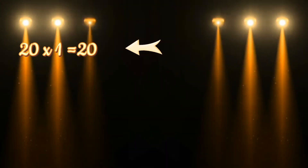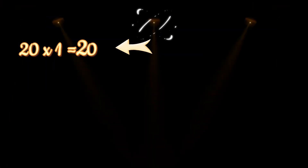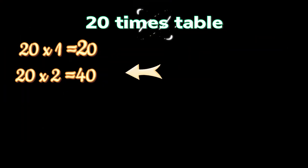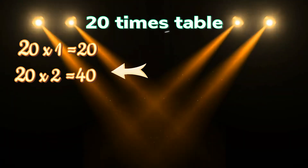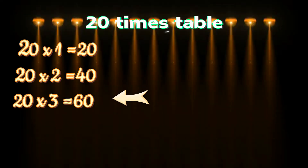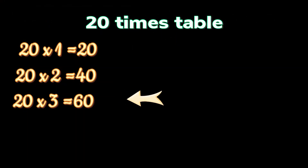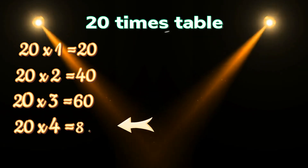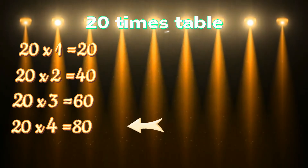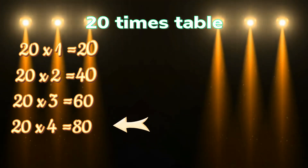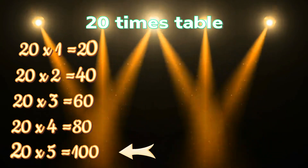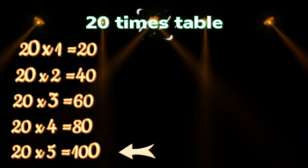20 times 1 is equals to 20. 20 times 2 is equals to 40. 20 times 3 is equals to 60. 20 times 4 is equals to 80. 20 times 5 is equals to 100.